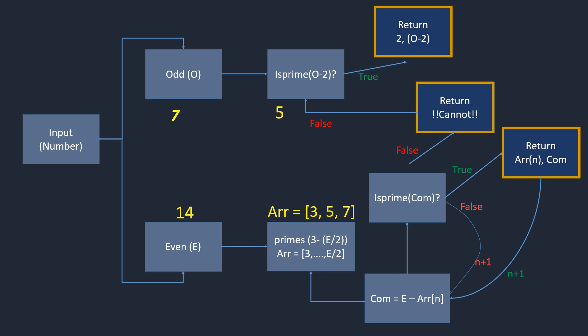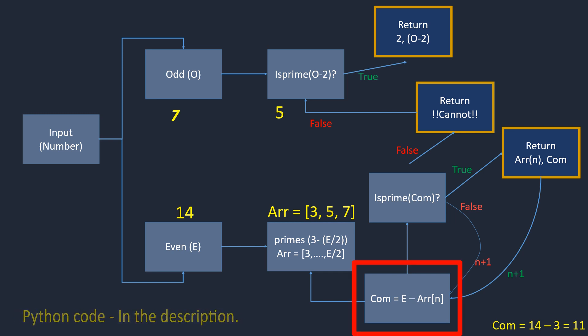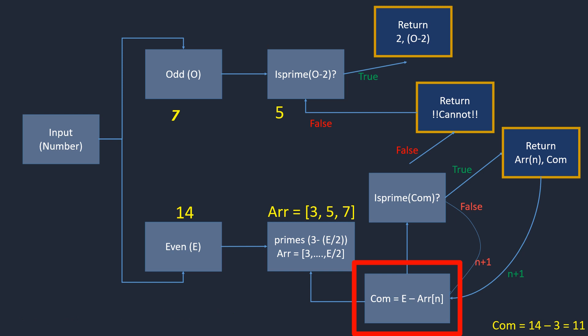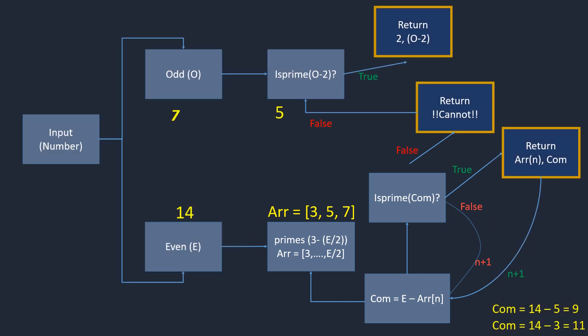For each prime in the array, we find its complement by subtracting it from 14. For example, the complement of 3 is 11, and we check whether 11 is prime. If it is, we return 3 and 11 as the output. We then increment to the next item — for 5, we get 14 minus 5 equals 9, which is not prime, so that returns false. We continue: for 7, 14 minus 7 is 7, and we check if 7 is prime. It is, so 7 plus 7 equals 14 is valid.